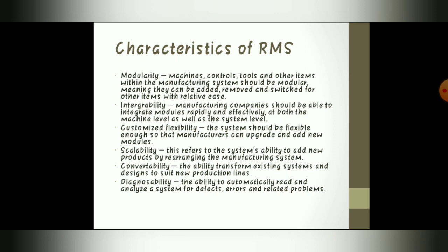Next is Convertibility. Convertibility means that the existing design and equipment needs to be reused for new production in the industry. After that is Diagnosability — the ability to automatically read and analyze a system for defects, errors, and related problems.